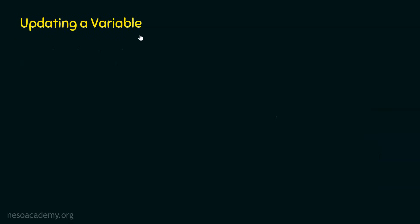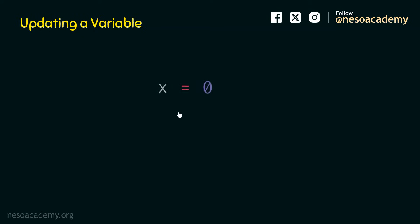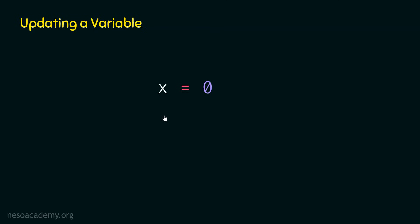We already know how to update a variable. But this very idea is needed to understand the basics of while loop. Let's understand how to update a variable. For this, we will consider one simple example. Let's say that x is equal to zero, and we want to update this variable — we want to add one to this value, so that eventually x becomes one. For this, we can use this statement: x equal to x plus one.